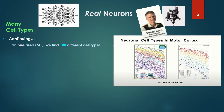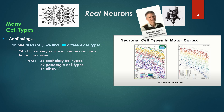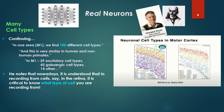In just one area — the motor area M1 — we find 100 different cell types, very similar in human and non-human primates: roughly 39 excitatory cell types, 42 GABAergic cell types, and 14 others. Koch notes that nowadays, when recording from cells — say in the retina — it is critical to know what type of cell you are recording from. So cell type is very important.